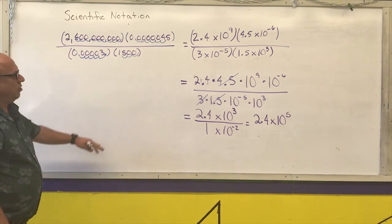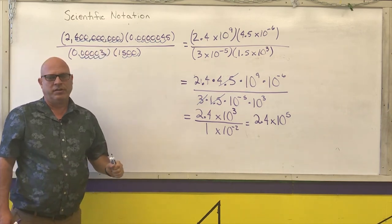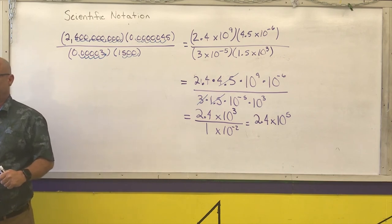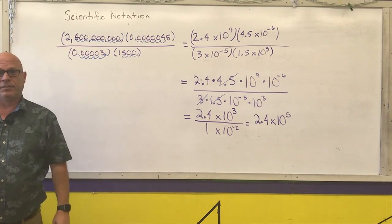And the final answer would be 2.4 times 10 to the fifth. So this is how you could use scientific notation and your properties of exponents to simplify problems, and that is all I'm going to cover for scientific notation.